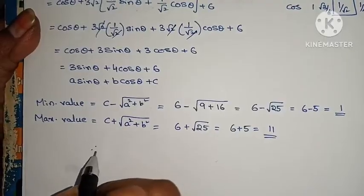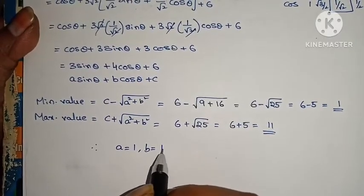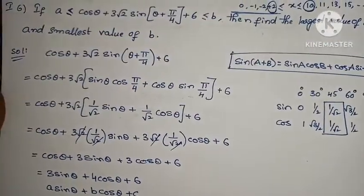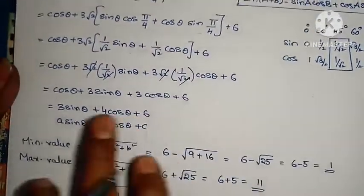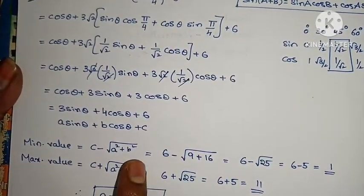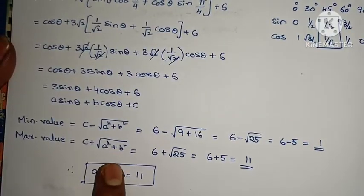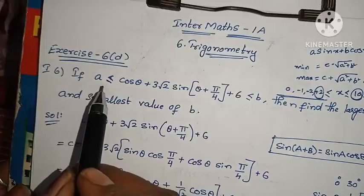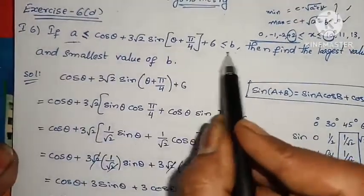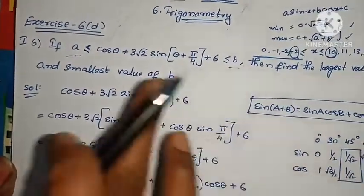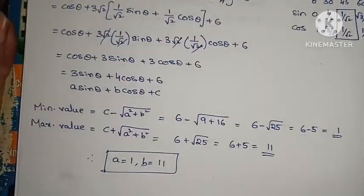Therefore A = 1 and B = 11. The function of the form A·sinx + B·cosx + C has minimum value C − √(A² + B²) and maximum value C + √(A² + B²). So A value is 1 and B value is 11. That is the 6th problem complete.